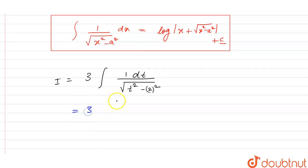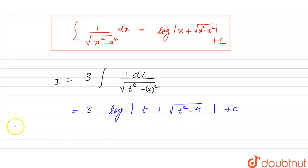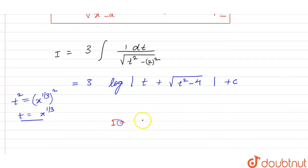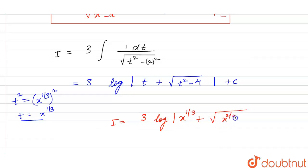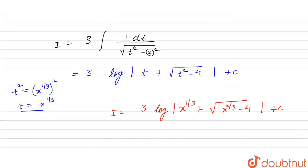So we get 3 times log of modulus t plus under root of t squared minus 4, plus C. Since t squared is x raised to power 2/3 and t is x raised to power 1/3, substituting back gives the final answer: I equals 3 times log of modulus of x raised to power 1/3 plus under root of x raised to power 2/3 minus 4, plus C.